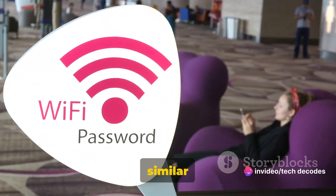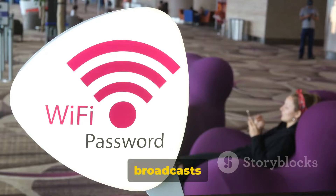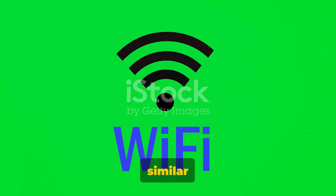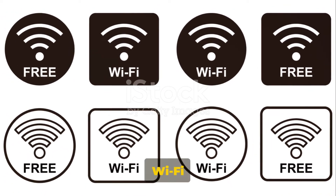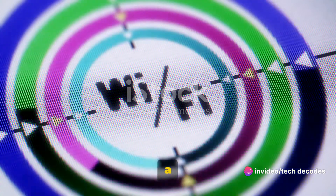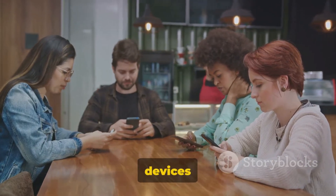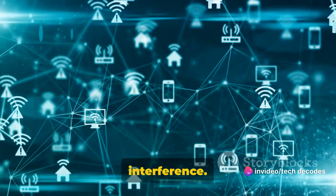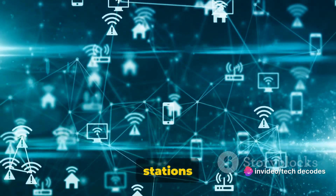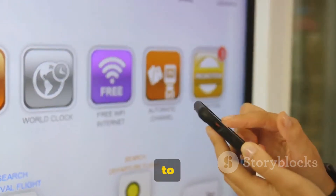Wi-Fi operates through specific channels, in a similar way to a radio. Imagine your Wi-Fi network as a radio station. Each station, or network, broadcasts on its own unique channel. In the radio wave spectrum, there are specific bands allocated just for Wi-Fi, divided into channels similar to how radio frequencies are divided into stations. Each Wi-Fi network operates on one of these channels — that's why, when connecting to Wi-Fi, you're asked to select a network, or in other words, choose a channel. This allows multiple devices to connect to different networks in the same space without causing interference, just like listening to different radio stations in the same room.